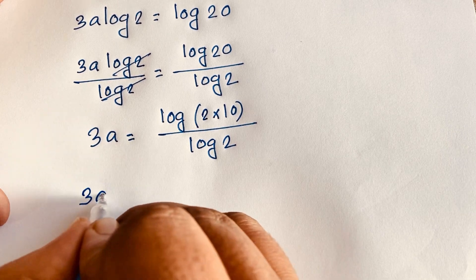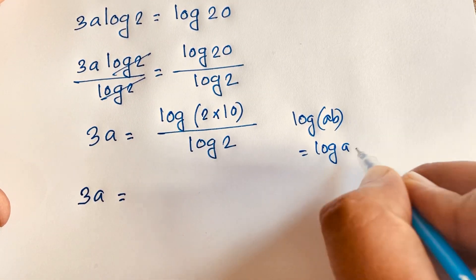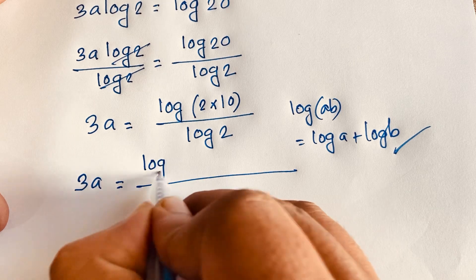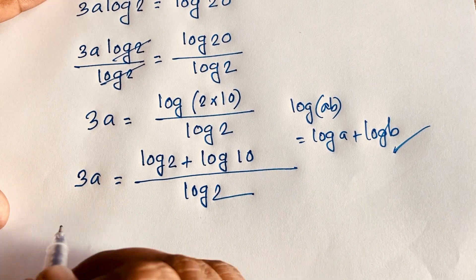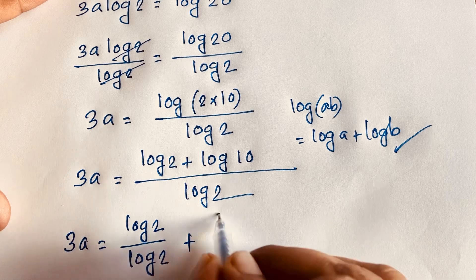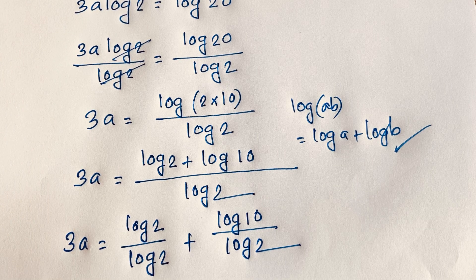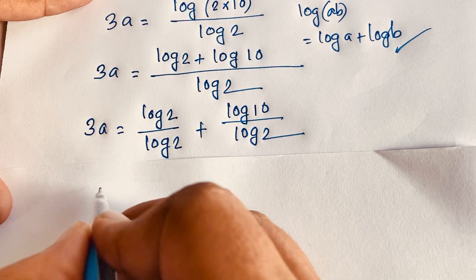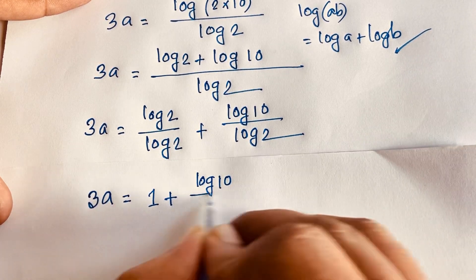So 3A equals log 2 times 10 divided by log 2, which can be separated into log 2 over log 2 plus log 10 over log 2. The log 2 over log 2 cancels out, and we will find out 3A is equal to 1 plus log 10 over log 2.